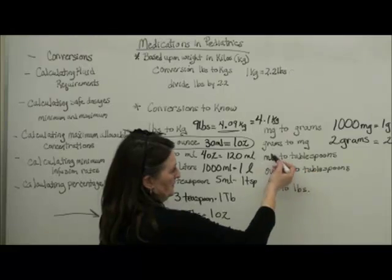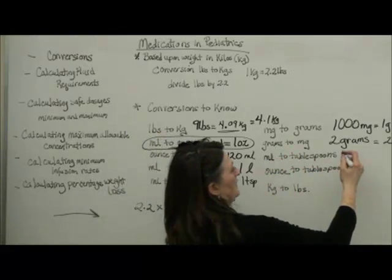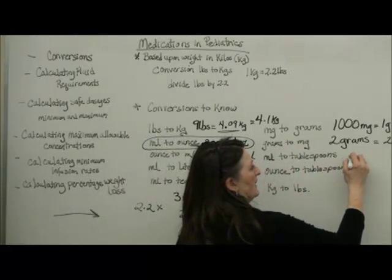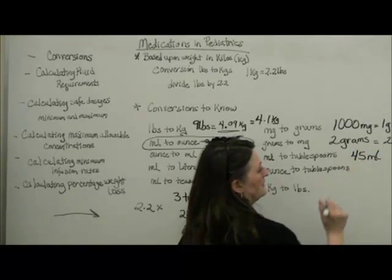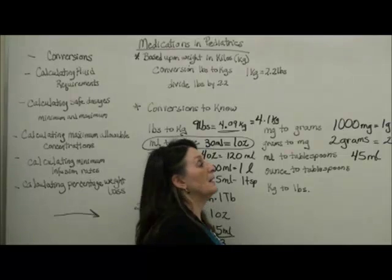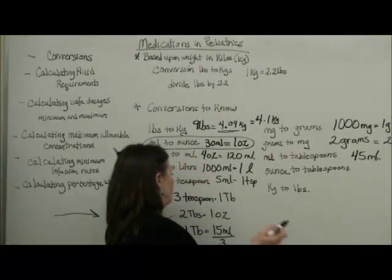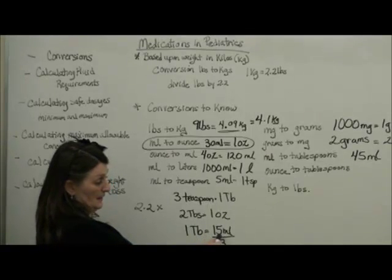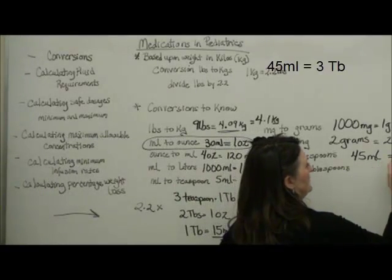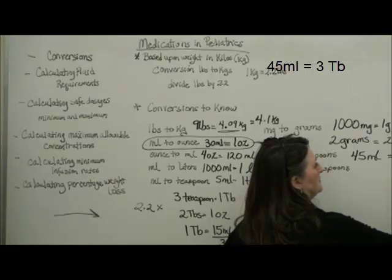Milliliters to tablespoons. Let me have somebody say, I have 45 milliliters, but the parents need to know how many tablespoons to give. Remember, a tablespoon is 15 milliliters. 45 milliliters is 3 tablespoons.